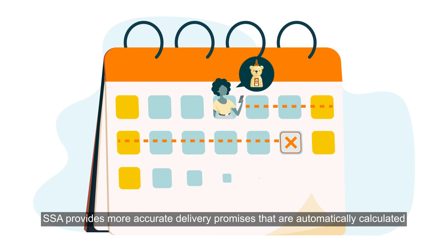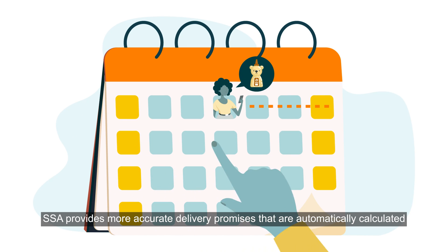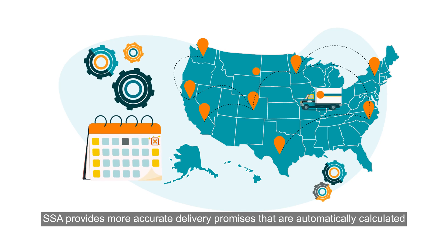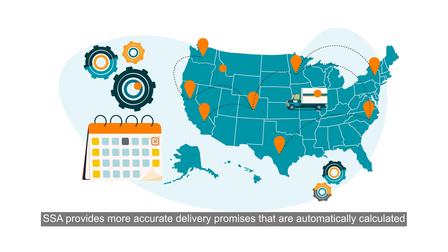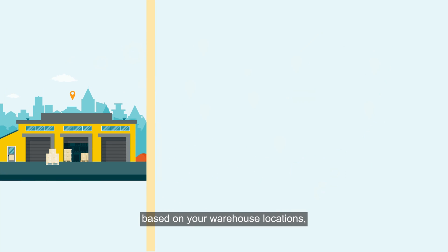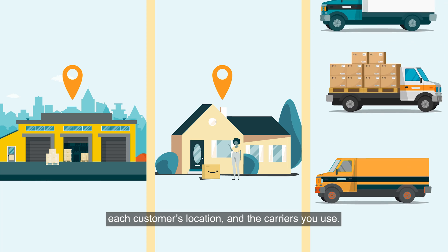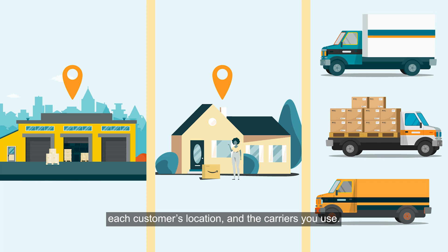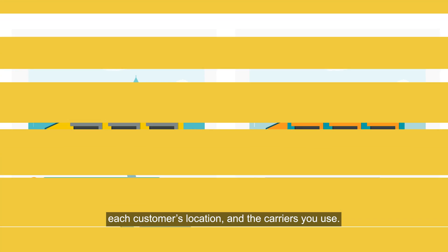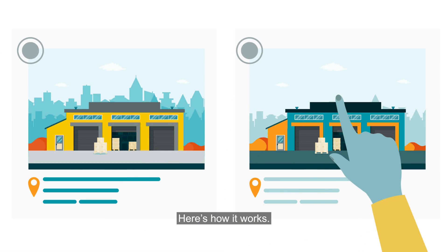SSA provides more accurate delivery promises that are automatically calculated based on your warehouse locations, each customer's location, and the carriers you use. Here's how it works.